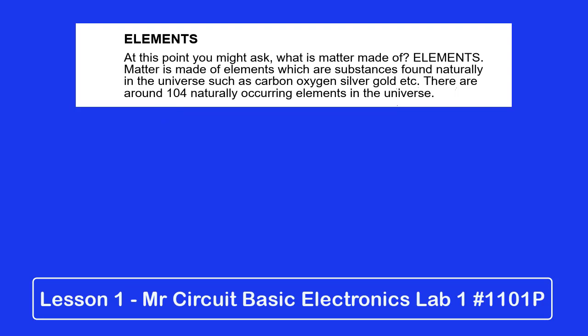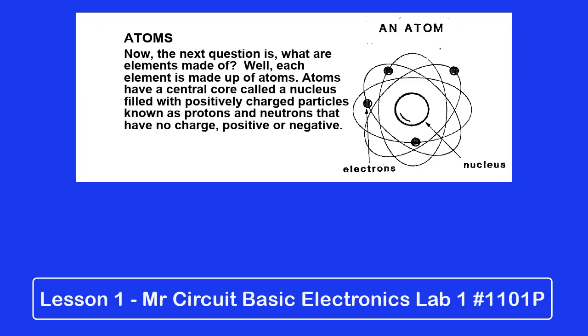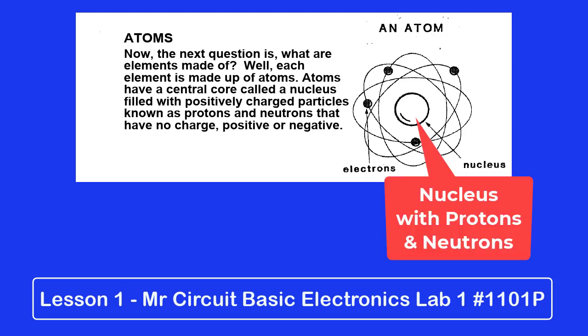Now, the next question is, what are elements made of? Well, each element is made up of atoms. Atoms have a central core called a nucleus filled with positively charged particles known as protons and neutrons that have no charge, positive or negative.